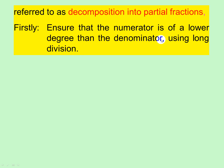Make sure that the numerator is of a lower degree than the denominator. Use long division if you have to. So if we look here: degree is one because it's x to the one, and degree is one because it's x to the one — no, that means we must use long division.